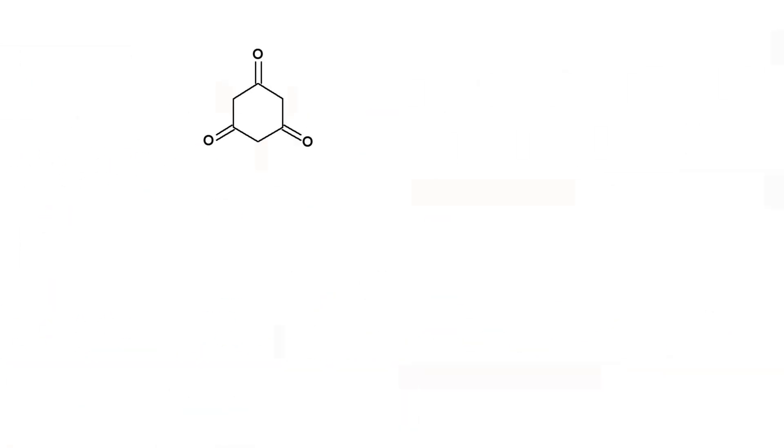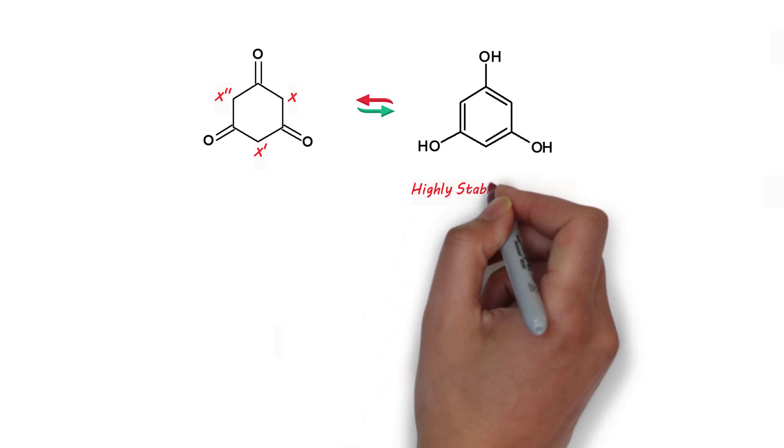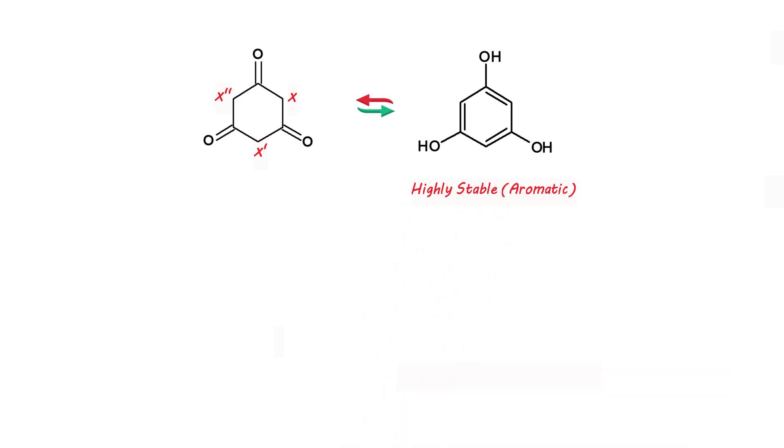Now moving on to cyclic systems, we have this particular molecule. Migrating hydrogens from X, X', X'' gives rise to a tautomer that is 1,3,5-trihydroxybenzene. This will be highly stable since being aromatic in nature.